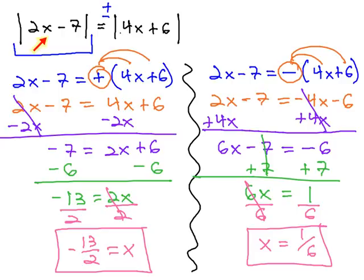There are two different numbers that could be plugged in for x to make this absolute value equation true: negative 13 halves and 1 sixth. We found these two solutions by considering both the positive and negative results of that second absolute value, to consider both when the signs match or the signs are different, but still the same number.